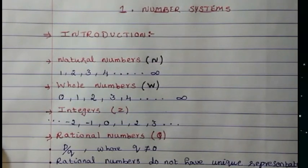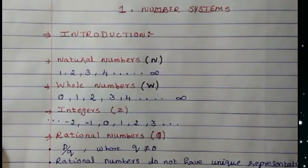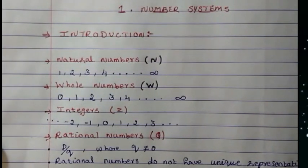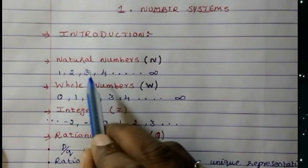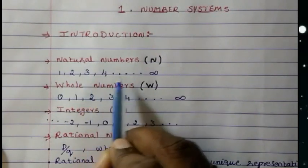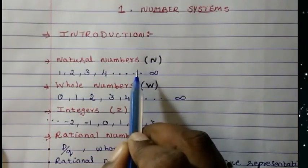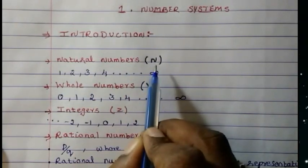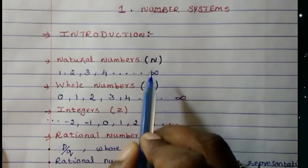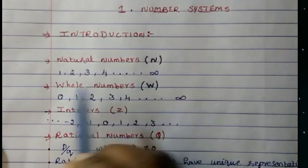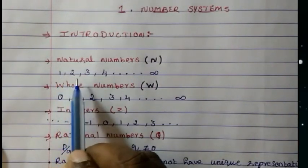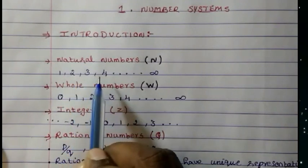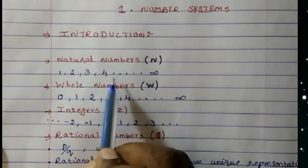You have already studied this, so let's recall. Something called natural numbers, also denoted as N. Natural numbers start from 1, 2, 3, 4 and so on. It's infinite.